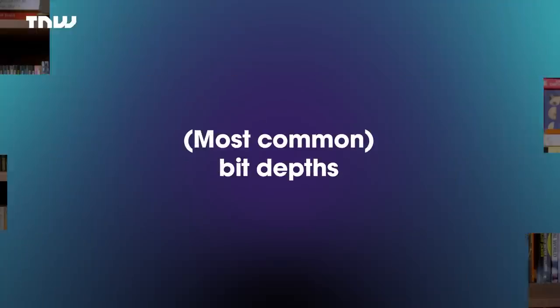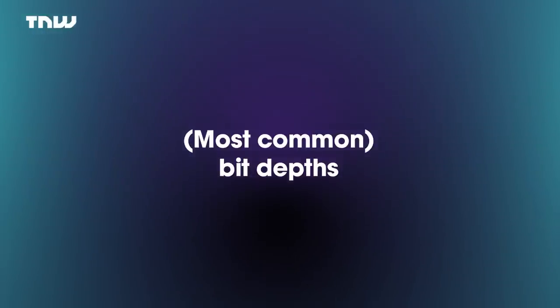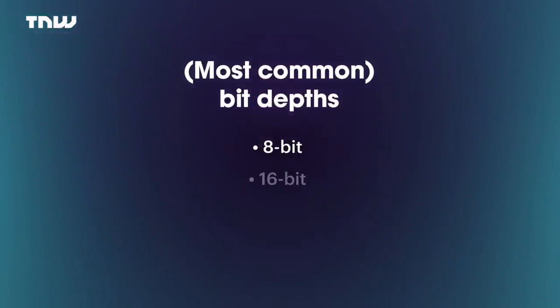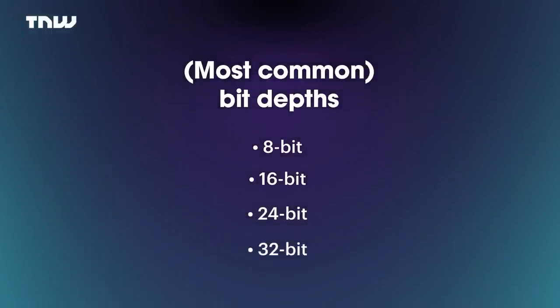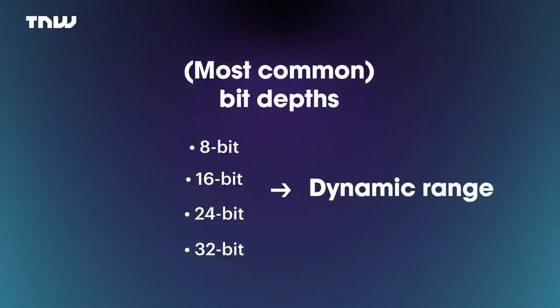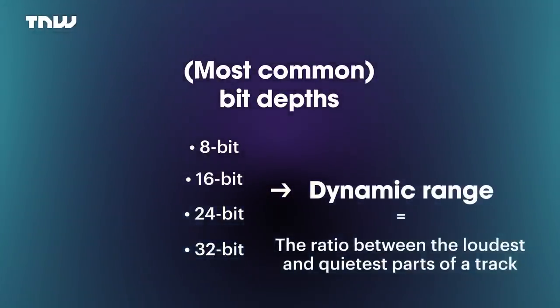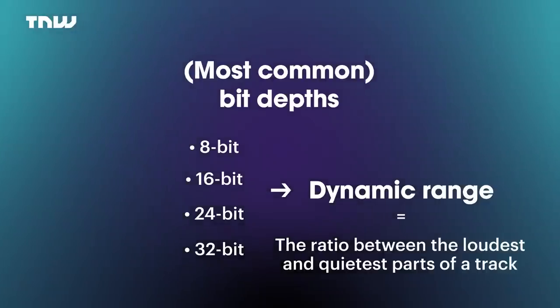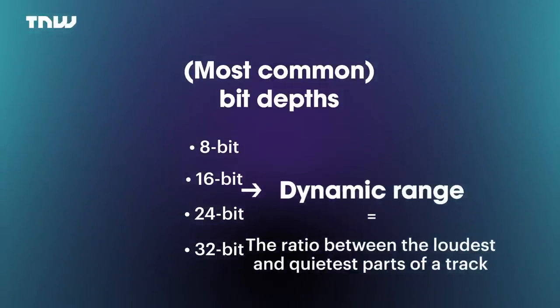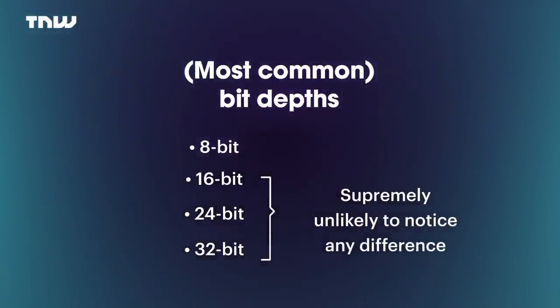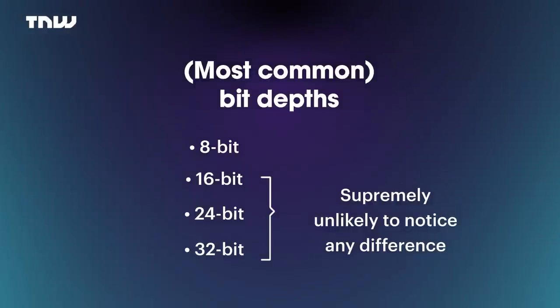If sampling rate is like frames per second on a television, then bit depth we can look at a little like resolution. There are four main bit depths in uncompressed music: 8-bit, 16-bit, 24-bit, and 32-bit. These control the amount of dynamic range available in a track — effectively how loud or quiet it is at certain points. This is going to annoy some audio nerds, but it is supremely unlikely that as a listener you will notice any difference once you go above 16-bit bit depth.